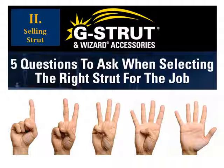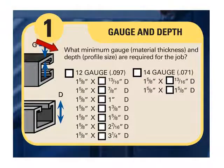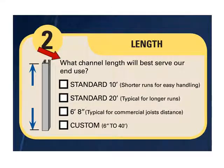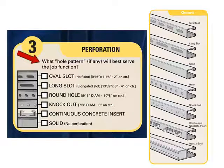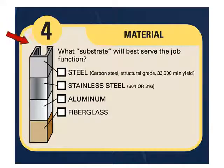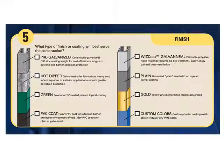Selling strut channel really boils down to asking 5 simple questions. Question 1: what minimum gauge or material thickness and depth or profile size are required for the job? In this example, we want 12 gauge and 1-and-5/8-inch depth. Question 2: what channel length will best serve our end use? In this example, we want 10-footers. Question 3: what hole pattern, if any, will best serve the job function? In this example, we want oval slots, sometimes also referred to as half slots. Question 4: what substrate or material will best serve the job function? In this example, we want standard carbon steel. Question 5: what type of finish or coating will best serve the construction? In this example, we want pre-galvanized steel.